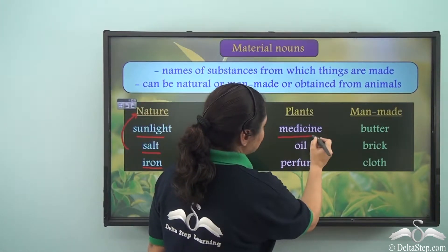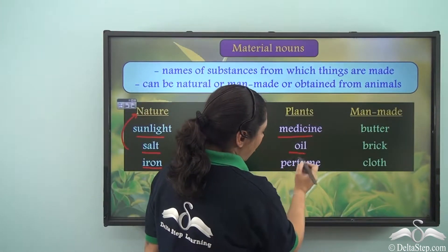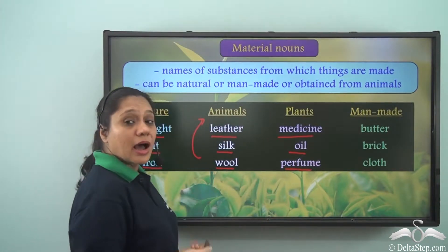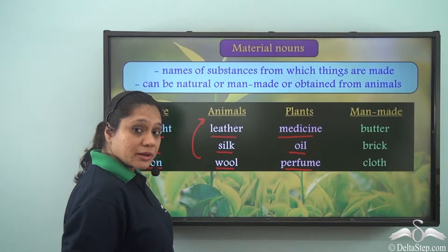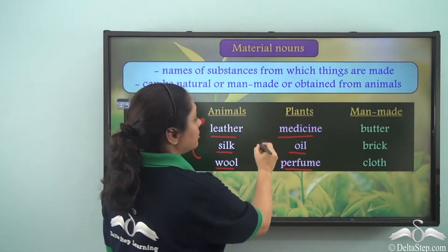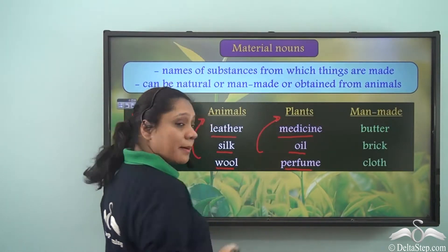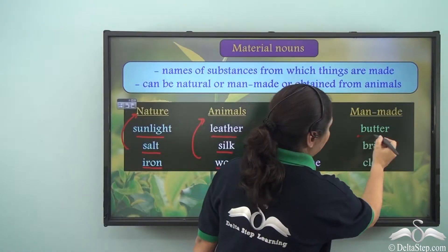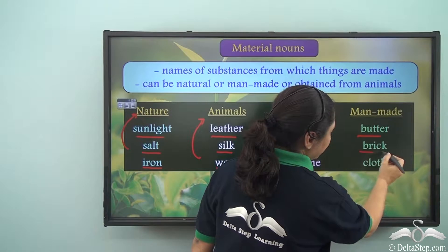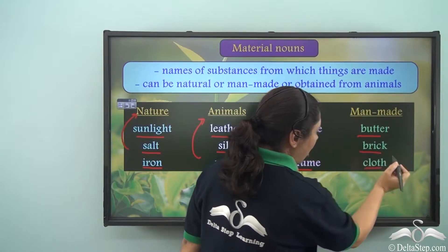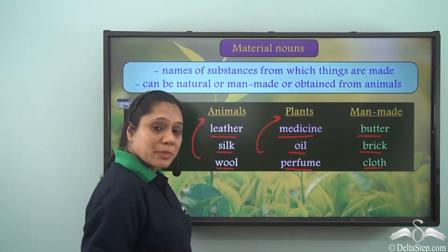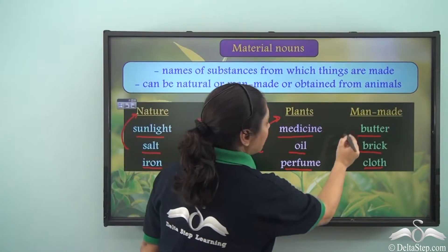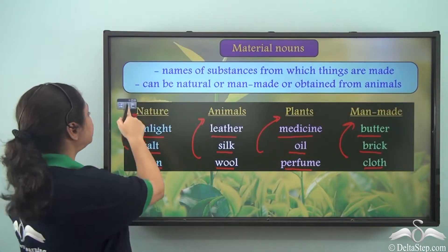Medicine, oil, and perfume are material nouns obtained from plants. Butter, brick, and cloth are material nouns that are man-made.